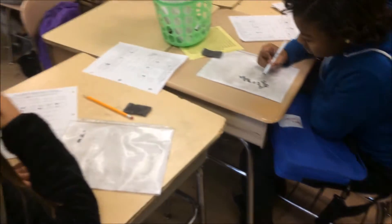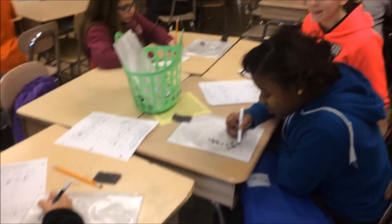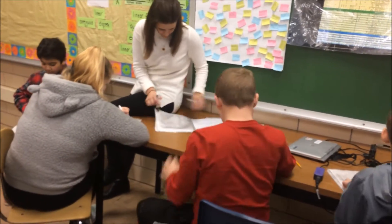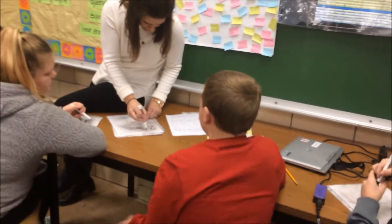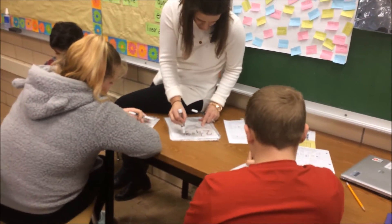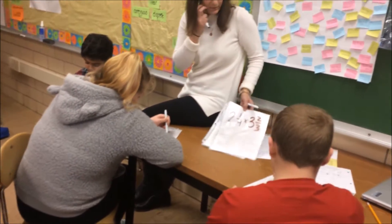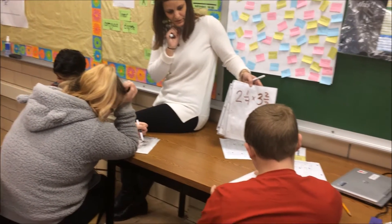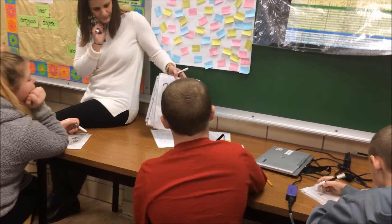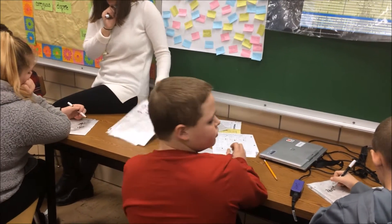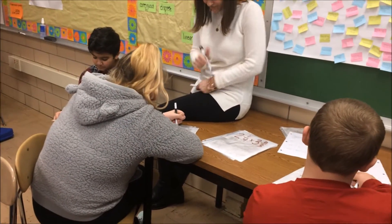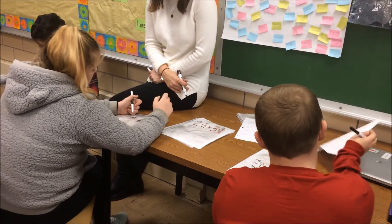I need everybody to set up. Two and one fourth times three and two thirds. That's number 12 on your paper — copy it on your board. Make sure you've copied it correctly. So now, according to the steps, what is the first thing we need to do with those two mixed numbers?